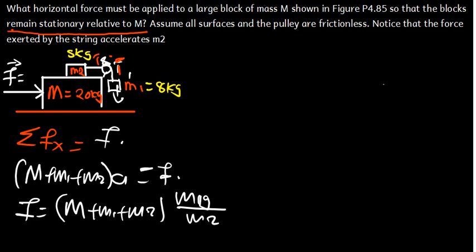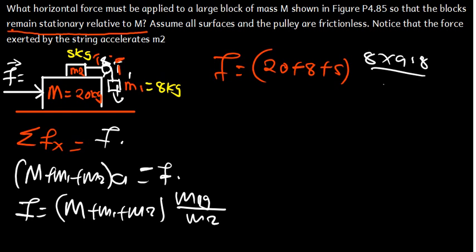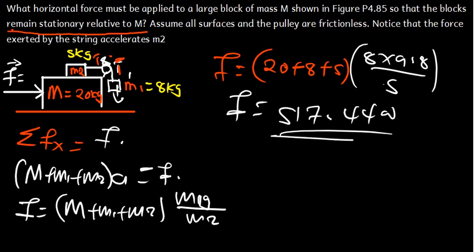So we're going to have our force is going to be our big M, which is 20, plus 8, plus 5. And then we have also the M1 is 8 times 9.8, everything divided by M2, which is 5. So we get our calculator and find our answer. We're going to see that the value which I'm getting is 517.44 Newtons.